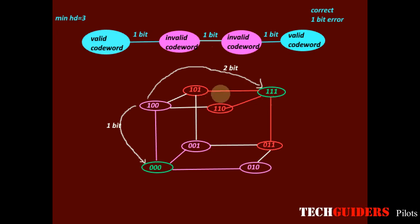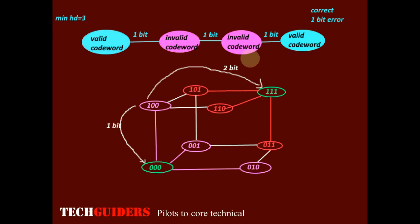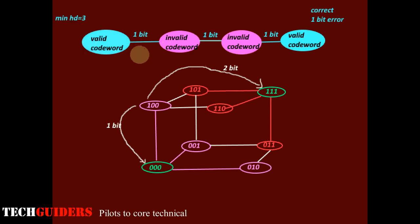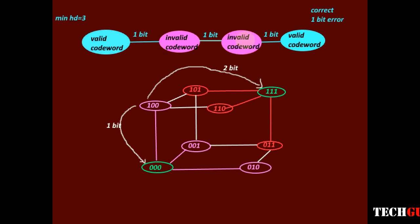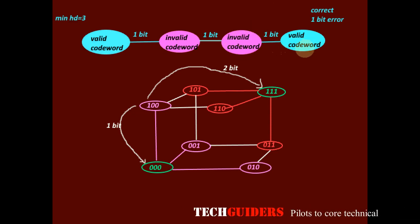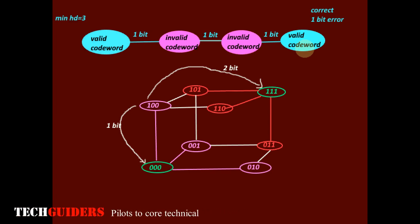If the minimum Hamming distance is 3, we can correct 1-bit errors. But what about 2-bit errors? The invalid codeword generated by a 2-bit error overlaps with the invalid codeword generated by a 1-bit error on another valid codeword. Hence we will not be able to correct 2-bit errors or beyond when the minimum Hamming distance is 3.